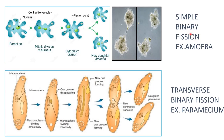Simple binary fission is seen in amoeba. This is a microscopic picture. In amoeba, the contractile vacuole disappears and the nucleus divides mitotically into two, forming two daughter cells or two daughter amoeba.